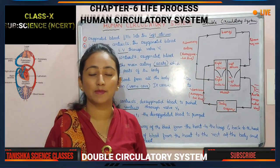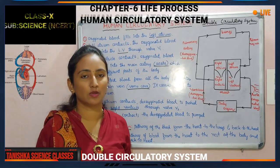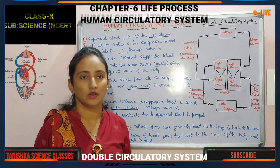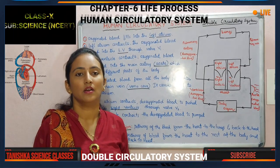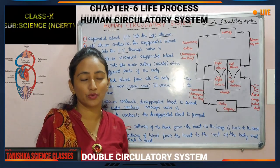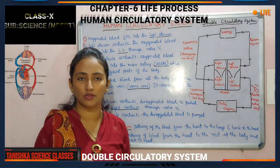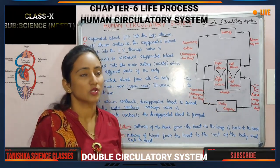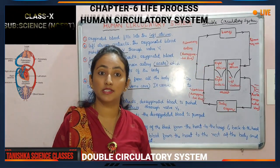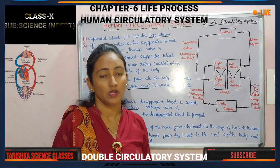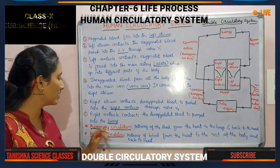It is called the double circulatory system because during the process, blood comes to the heart twice. It is a four-chambered heart. All human beings and most mammals contain a four-chambered heart. Whoever has a four-chambered heart has a double circulatory system. This four-chambered heart helps prevent the mixture of oxygenated blood and deoxygenated blood. Some animals have a three-chambered heart, some have a two-chambered heart — like fish, which have only one atrium and one ventricle. The human circulatory system is an example of a double circulatory system.